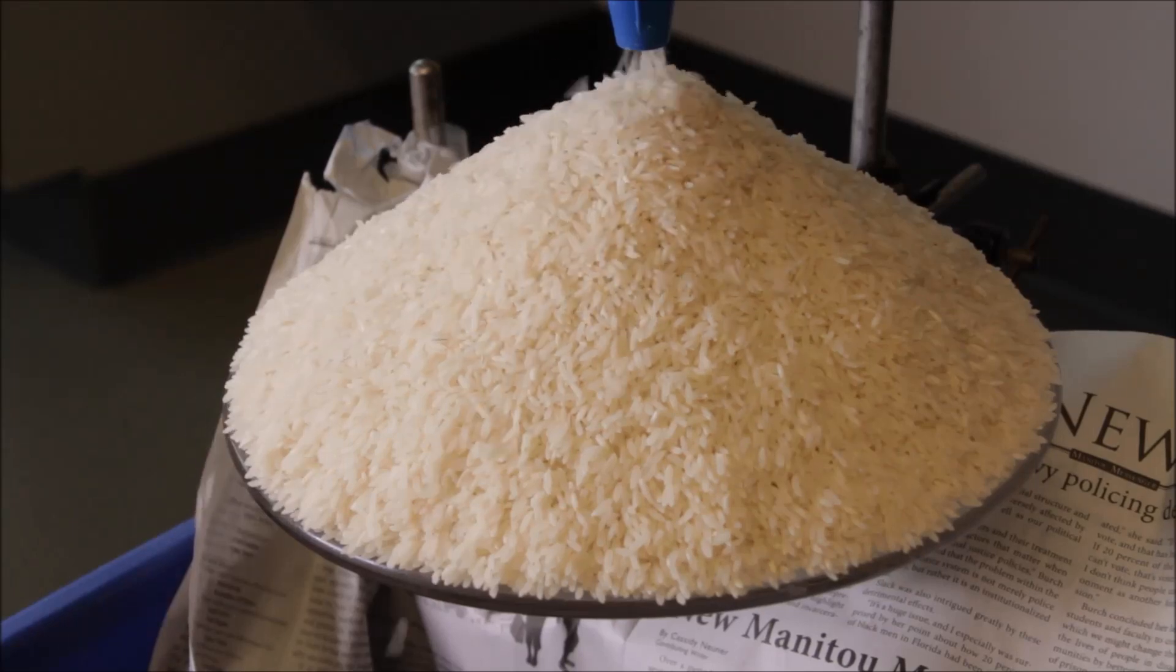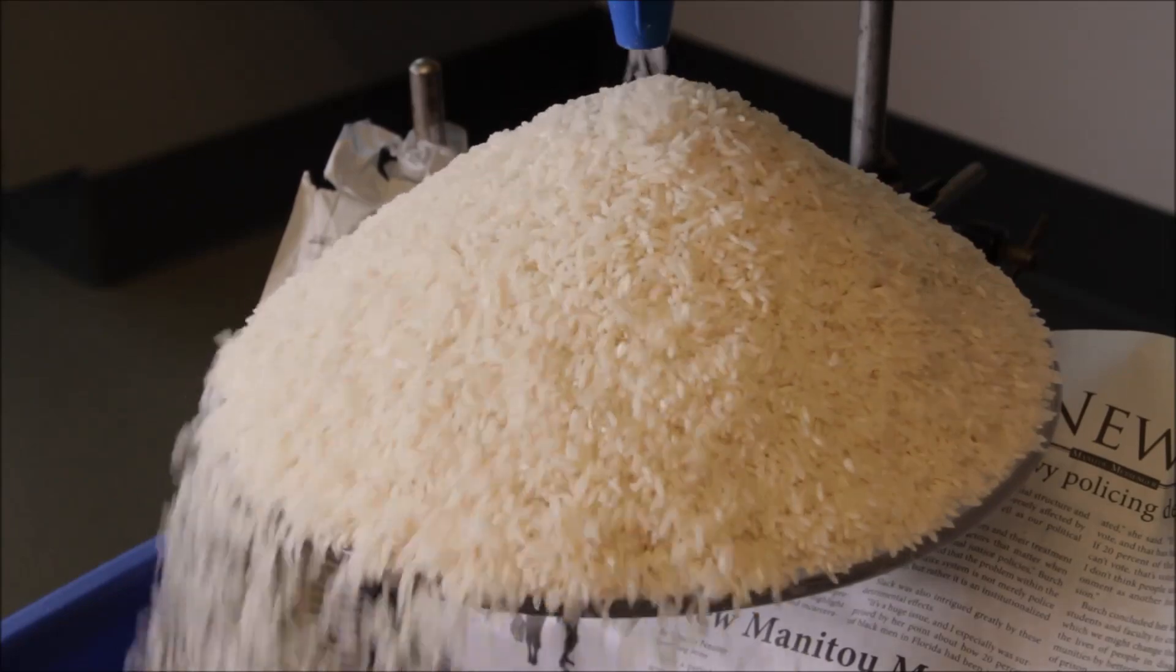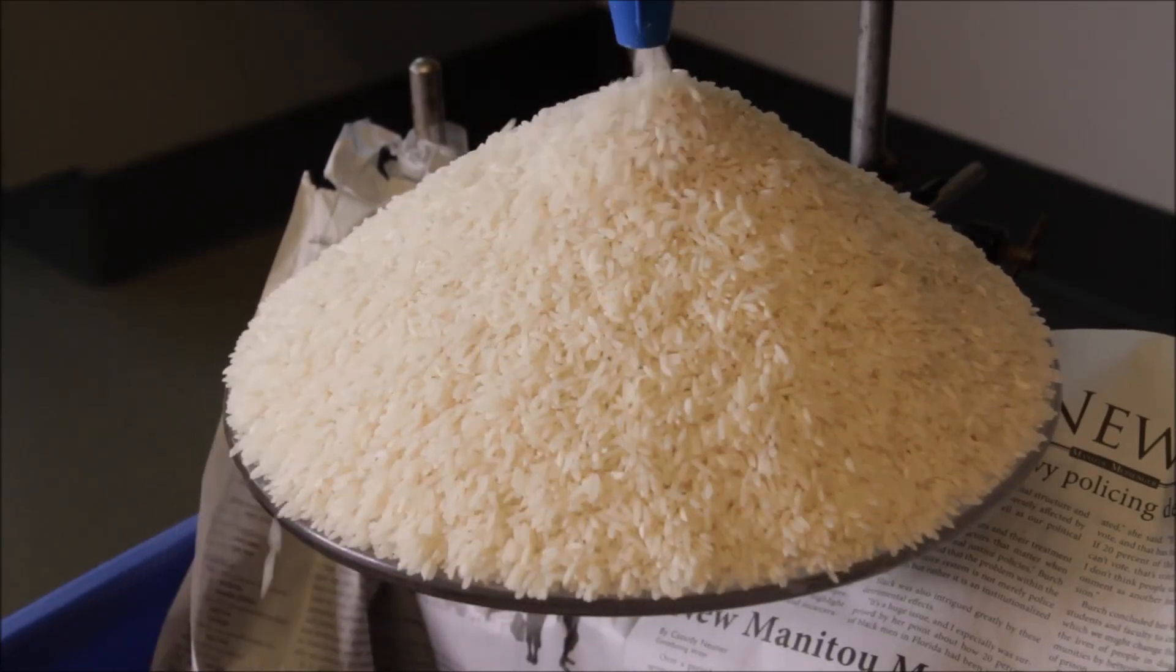Some nice features that distinguish our rice pile from our sand pile are these smaller avalanches that don't span the entire length of the pile.